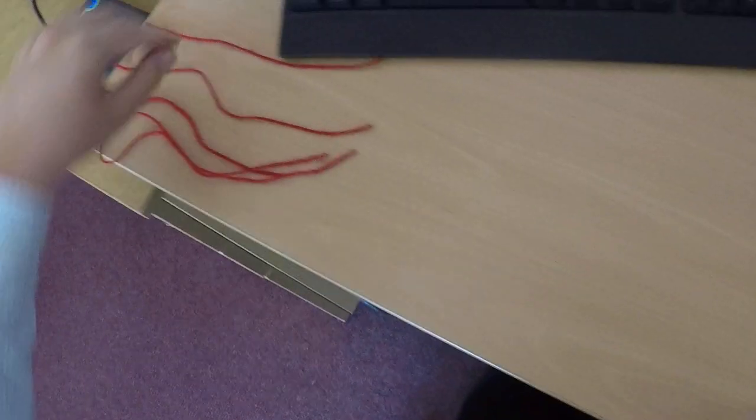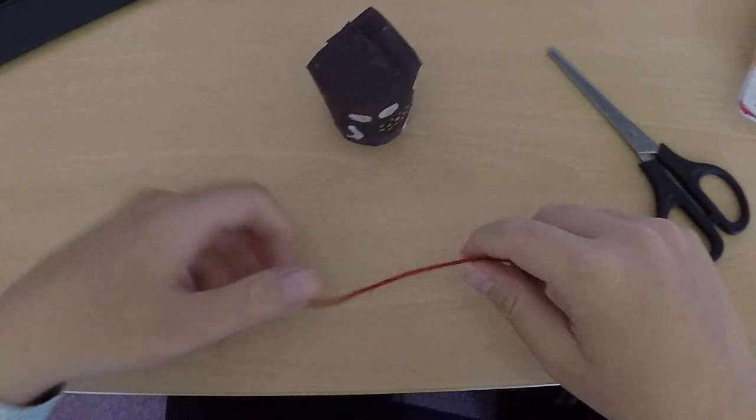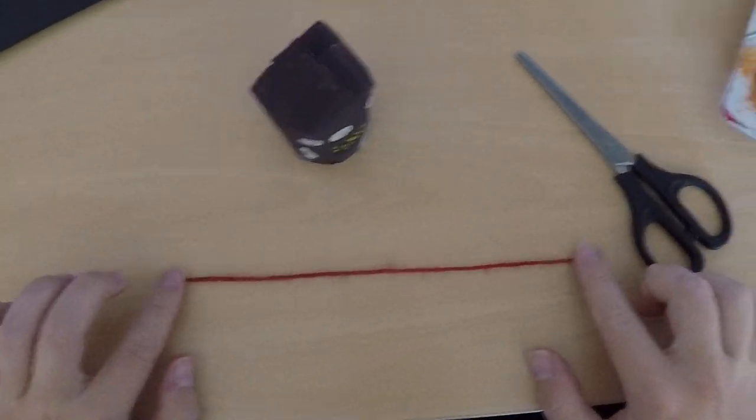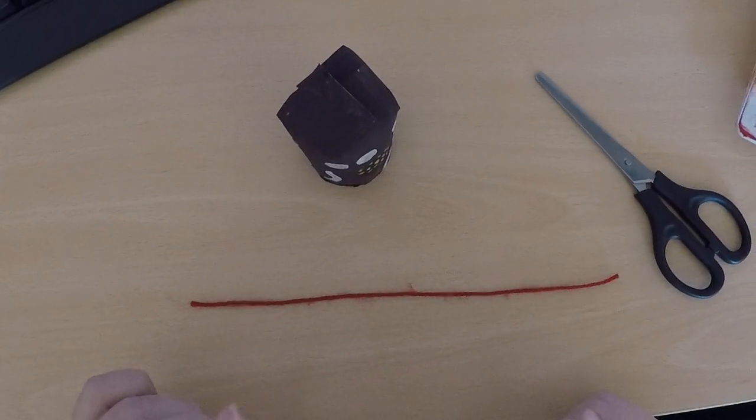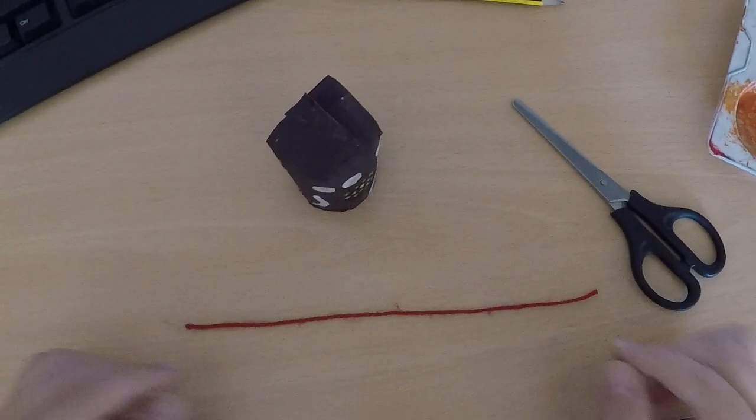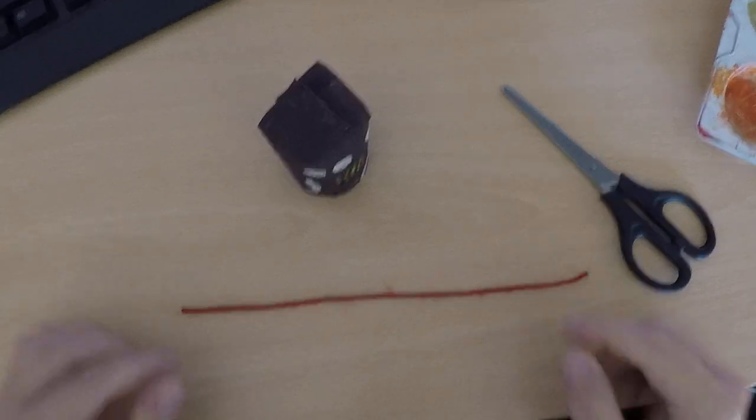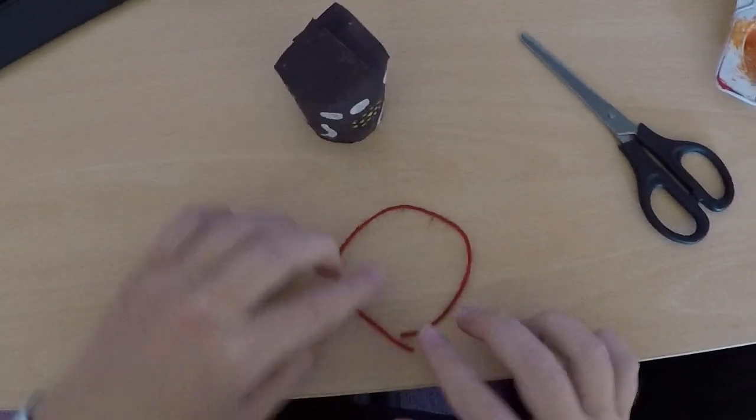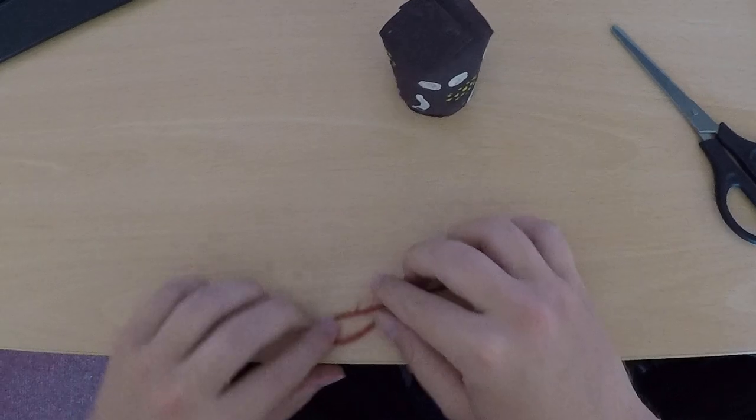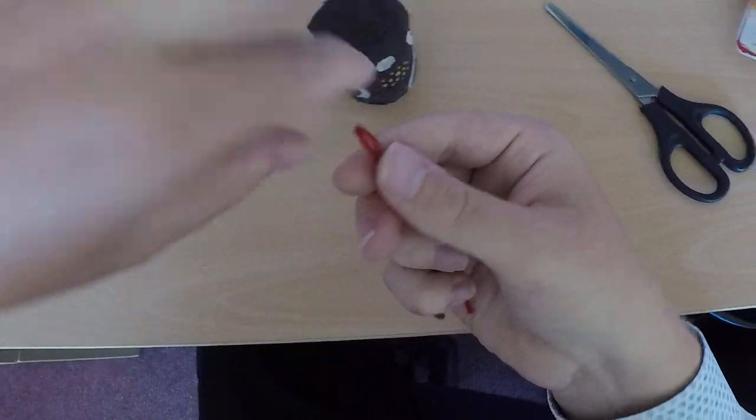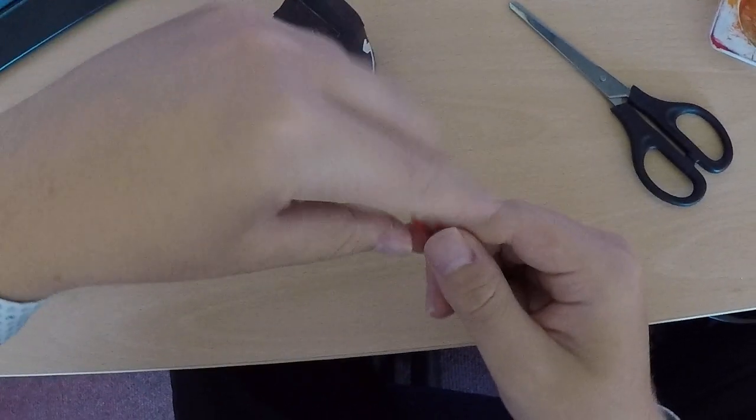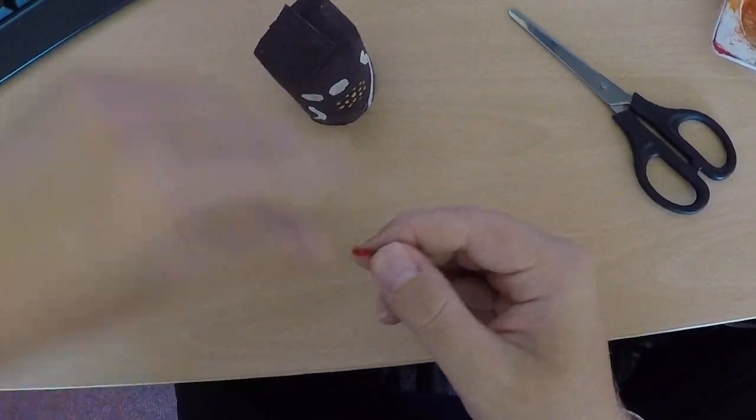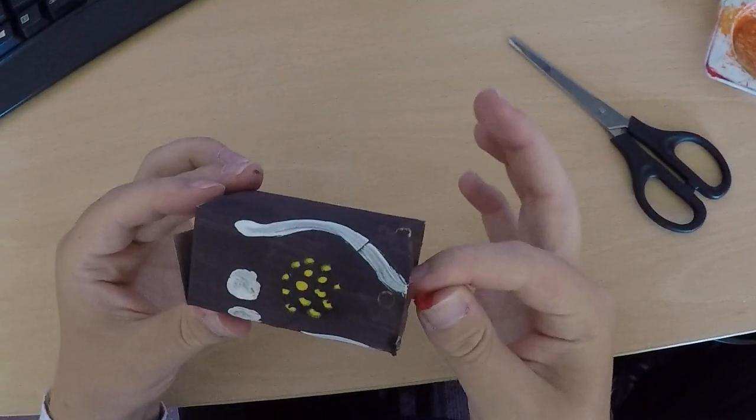And then I'm going to take my wool. You can cut this to whatever length you want but you've got to remember you're going to fold it in half. So whatever length this is, it's going to be half the length when it's on your octopus. We're going to fold it in half and poke this looped end through one of our holes.